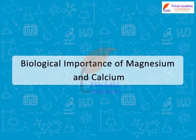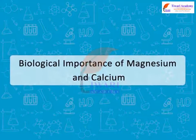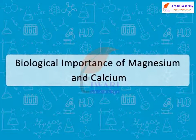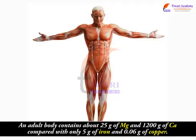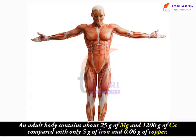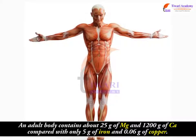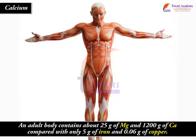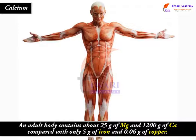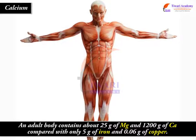Biological importance of magnesium and calcium. An adult body contains about 25 grams of magnesium and 1200 grams of calcium, compared with only 5 grams of iron and 0.06 grams of copper.